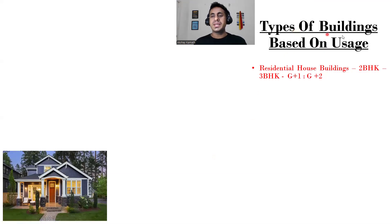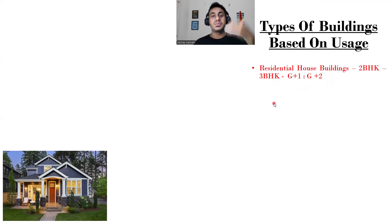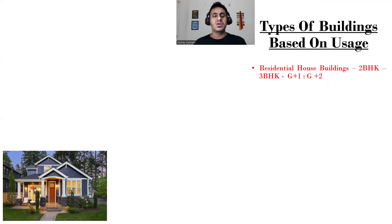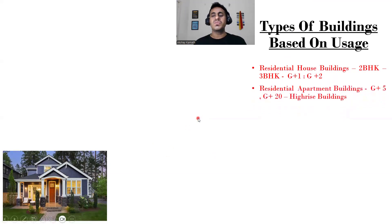Coming to the types of buildings based on usage: the first is the normal residential house building that you usually see, like a 2 BHK or 3 BHK home, or a G+1 or G+2 story building. A normal house is only a ground-story building, and if there is one more floor it will be called G+1, that is ground plus one story — we call that a residential building.